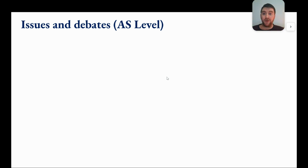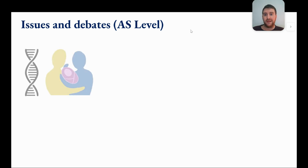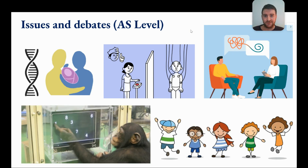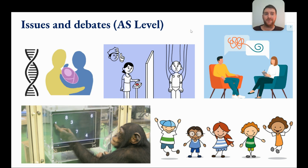Hi there. This will be a short video on the five issues and debates that students need to understand for AS level in the CIE Psychology Syllabus 9990. There are five issues and debates represented by these pictures, and a further five at A level, so I will make a separate video for those. If you're taking all four papers together, you need to know all ten — these five for AS level and the other five for A level.